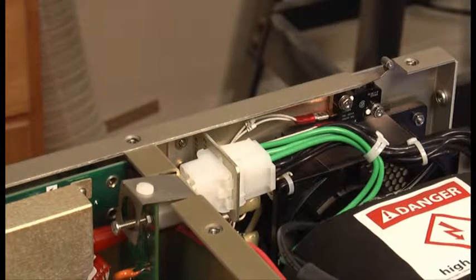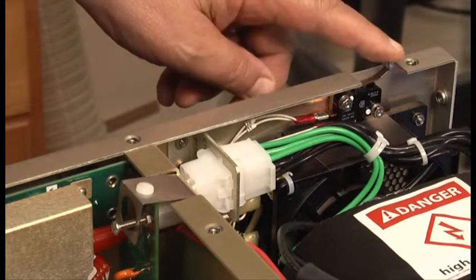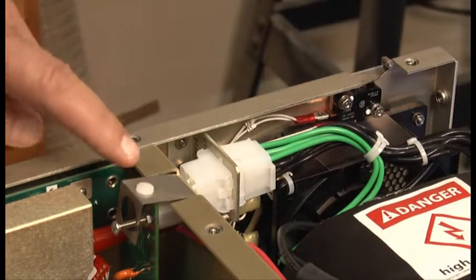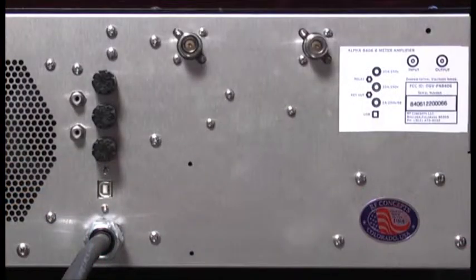For safety, there are two cover interlock switches to help protect against dangerous electrical shock. The first removes primary power from the amplifier, and the second is a crowbar circuit to short the high voltage to the chassis.